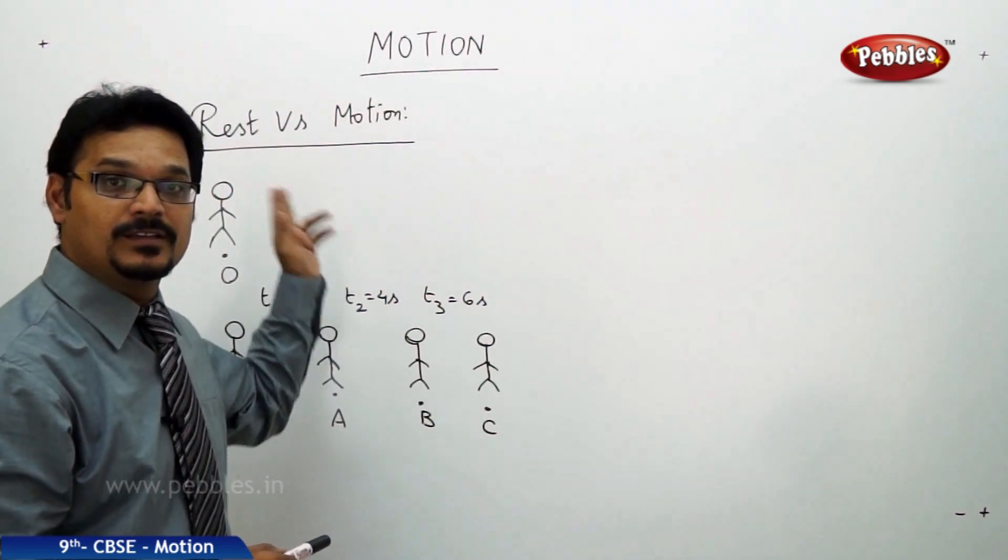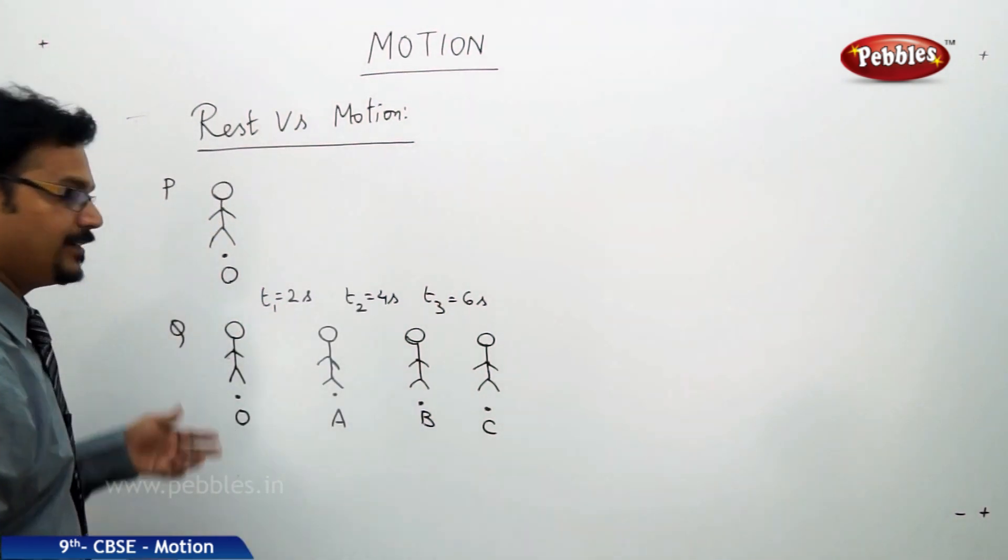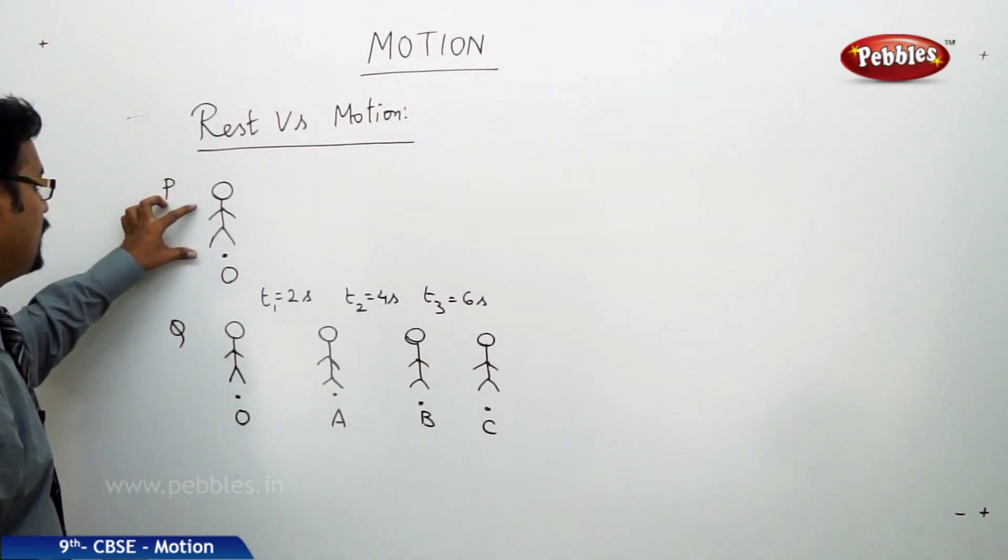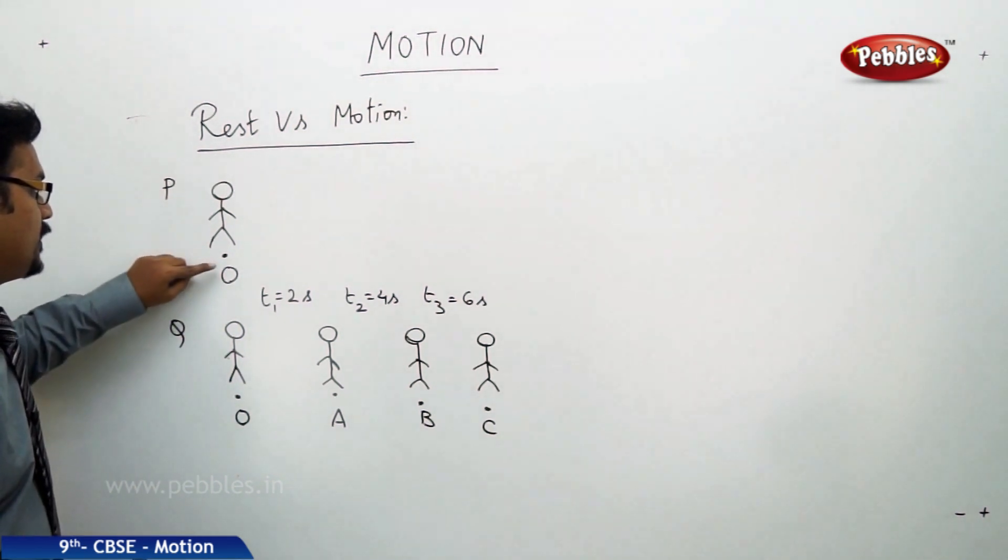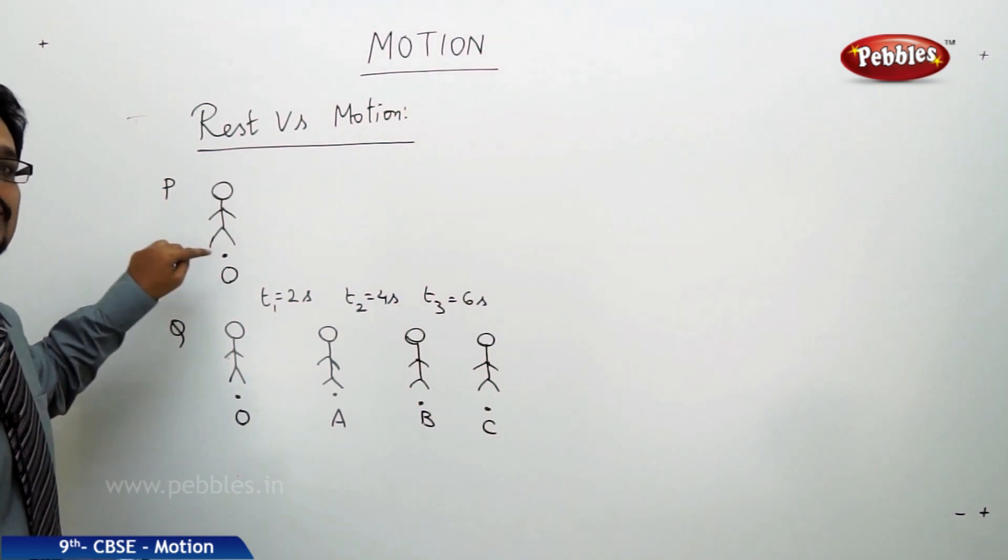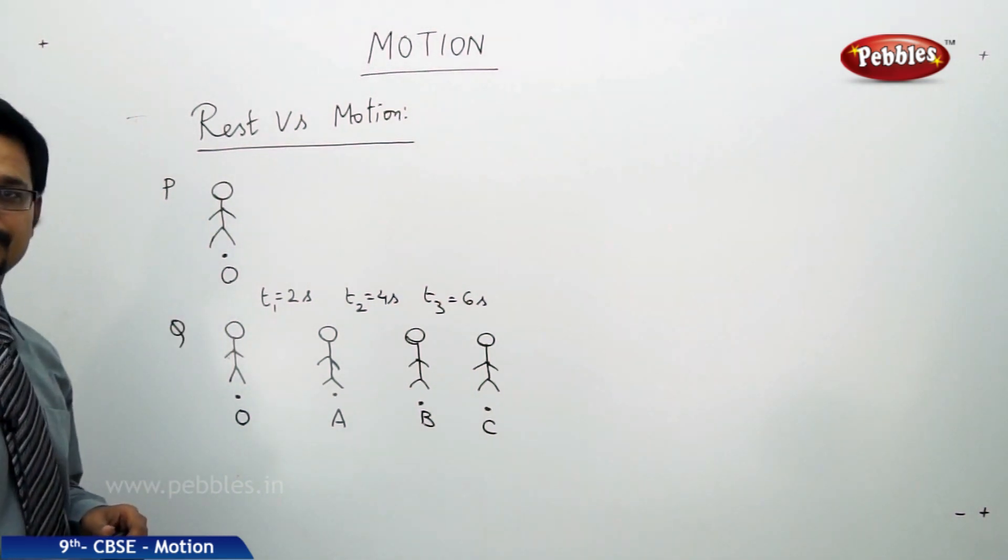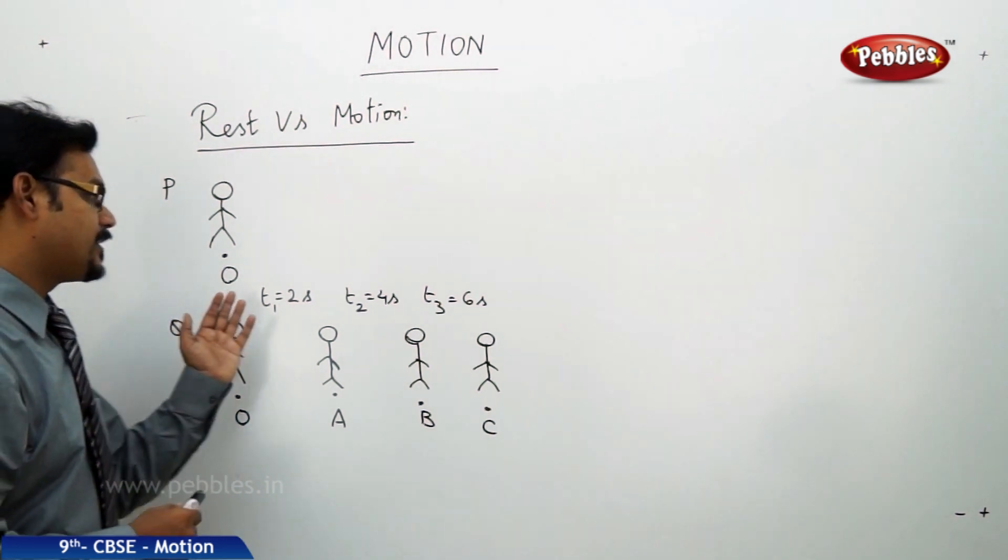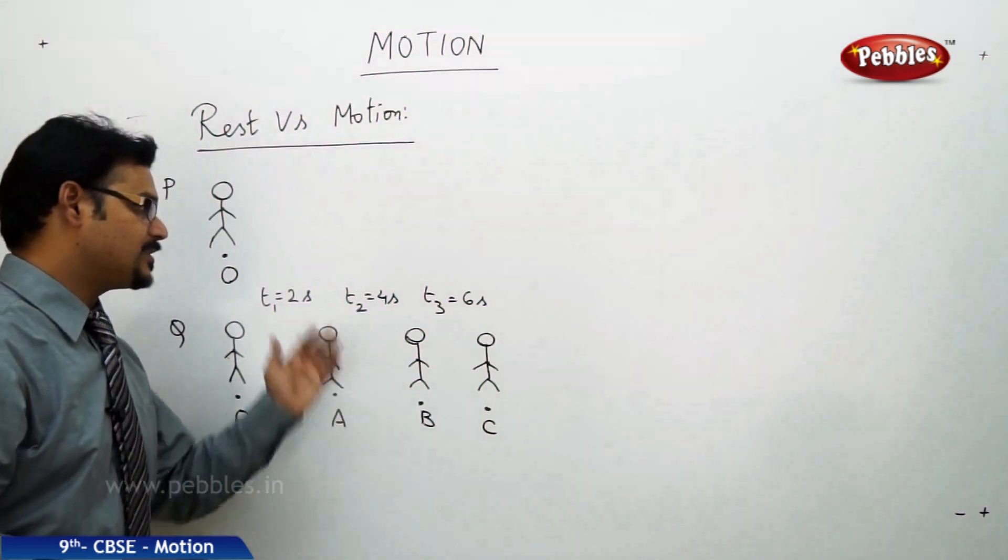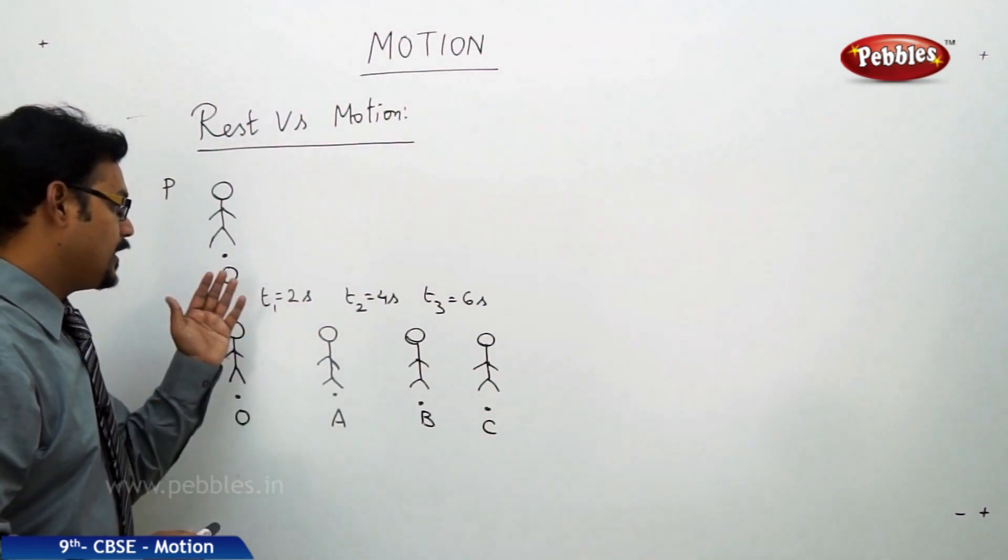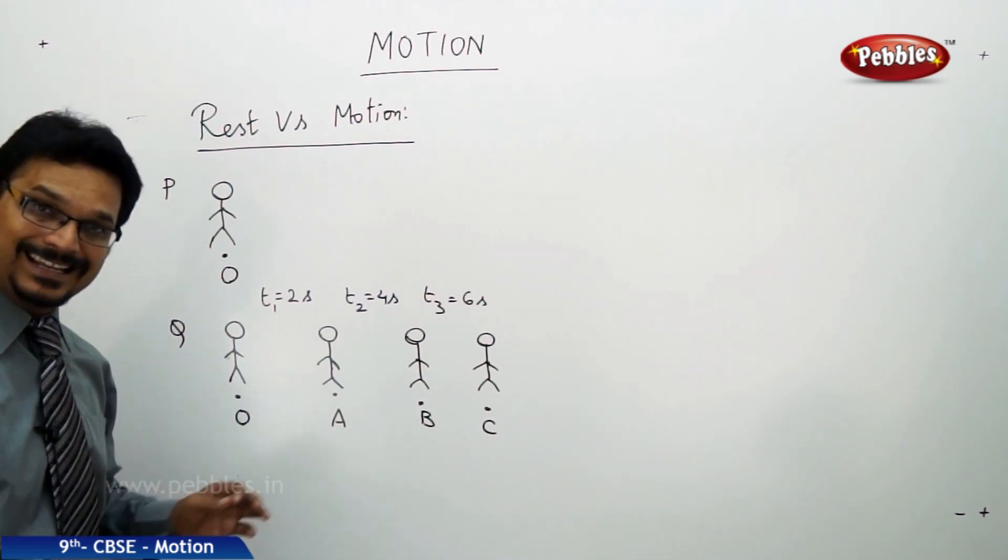See the diagrams here. A person P, a person Q. This person P is at the location O, at the position O, at time t equal to 0. Now the time is increasing, 2 seconds, and later 4 seconds, and later 6 seconds. Even though the time is increasing, the person P is still at the same location O. Then we say that the person is at rest state.